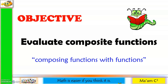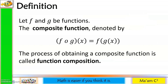Our objective is to evaluate composite functions. Composite functions is also known as composing functions with functions. Let f and g be functions. The composite function denoted by f∘g(x) is equal to f of g(x). The process of obtaining a composite function is called function composition.